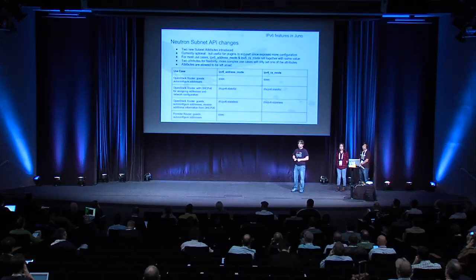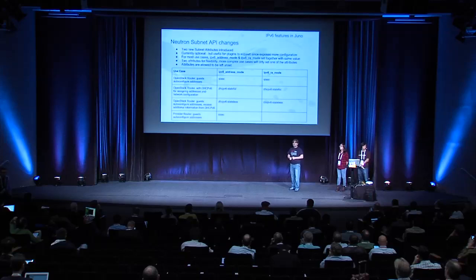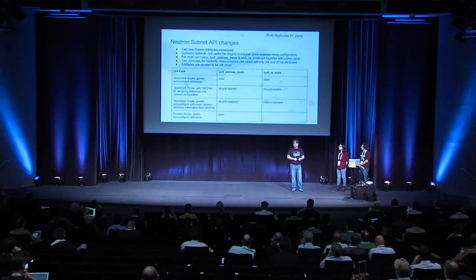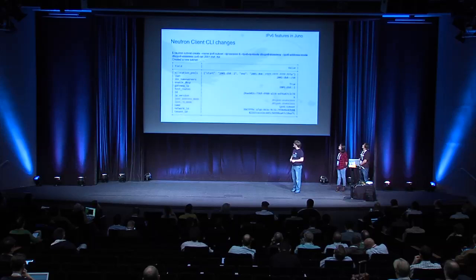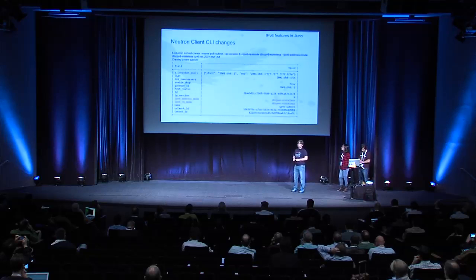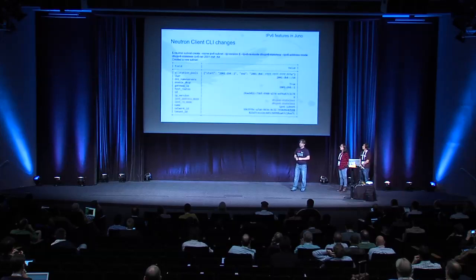We used two attributes because there are also some corner cases where only one of the attributes will be set. If you already have a router that is advertising routes and a prefix, the only thing you would want to do is have OpenStack calculate the address correctly so that in API requests, the dashboard, and all other types of interactions, the address is shown to the user correctly. This is an IPv6 subnet with the optional attributes set — it looks very similar to before, but with just two new attributes.